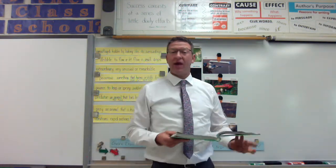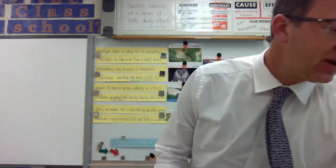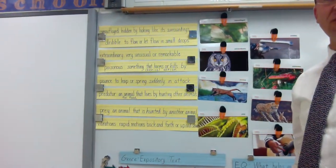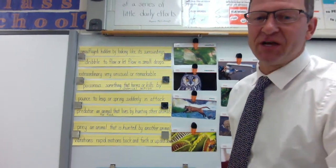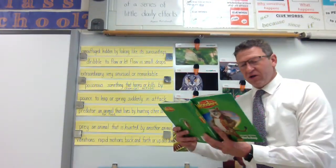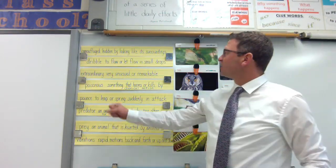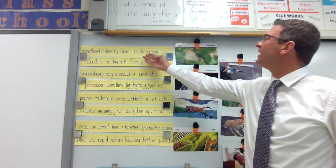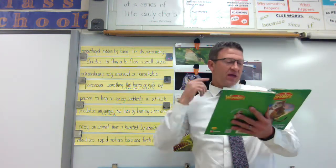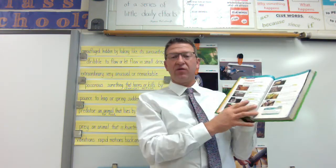So this week we're going to talk about animal adaptations. Let's get our vocabulary first. The first word is camouflage. If you're looking in your books on page 134, you can see that butterfly or moth is camouflaged. The definition is: hidden by looking like its surroundings. It is hard to see the camouflaged insect because it blends in with the leaf.